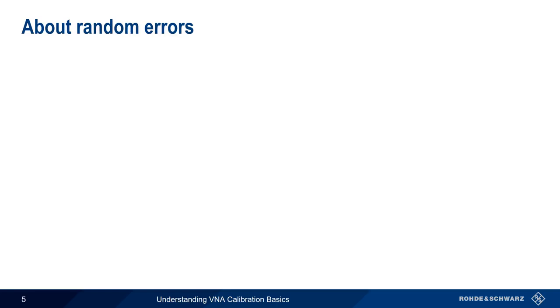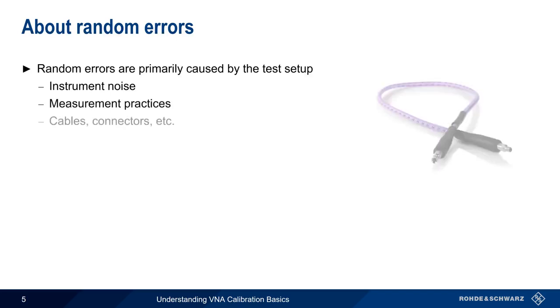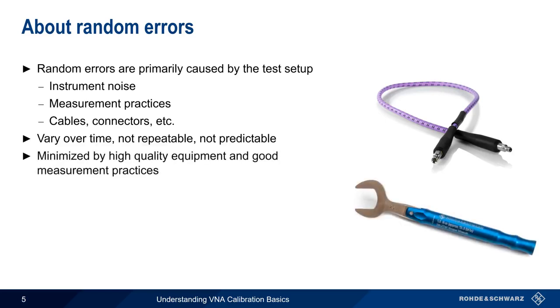As opposed to drift errors which are mostly caused by the environment, random errors are primarily caused by the test setup. This includes things like the noise from the instrument, measurement practices and settings, and even differences in the way that cables and connectors are attached to the test setup. The reason these are called random errors is that they vary over time in a non-repeatable, unpredictable way. High quality components and good measurement practices can help to minimize random errors. But just like drift errors, random errors can only be minimized, not removed completely.